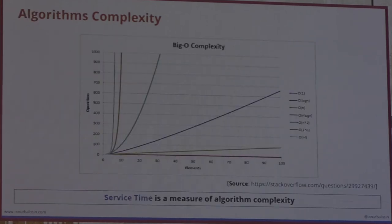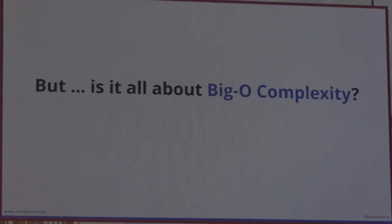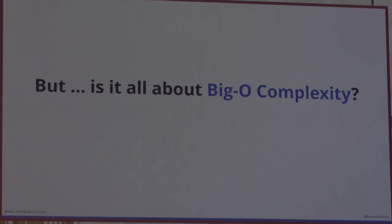We learned from high school that lower algorithm complexity gives us lower service time. But let's think about modern hardware with CPUs and multiple layers of caches. How does complexity fit on modern architecture? I took the simple case of matrix row traversal to illustrate this. There are two approaches: row-wise traversal, where you keep the same row and change columns, and column-wise traversal, where you keep the column and change rows.